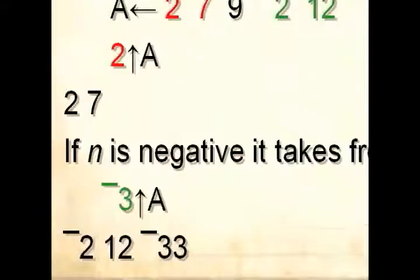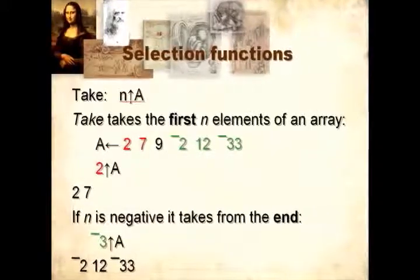If n is negative, it will take from the end. So if you do minus 3 Take, it takes the last three elements of the vector.